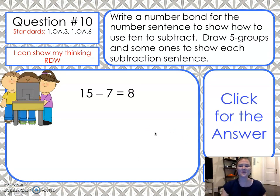This is the last problem. Let's end strong. Write a number bond for the number sentence to show how to use 10 to subtract. Draw 5 groups and some ones to show each subtraction sentence. So, you're going to use your take from 10 strategy, just like the last problem. You're going to break your 15 up into 10s and 1s. You're going to take those 7 ones away, and then put those extra ones back together. We already told you the answer is 8. What we are focused on is that you can show your work and defend your thinking. Please draw your picture now.